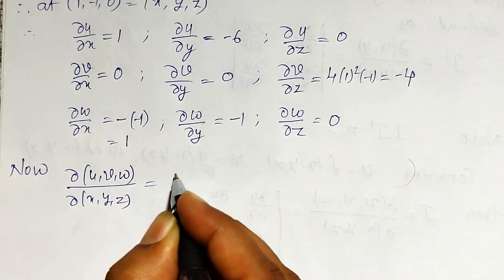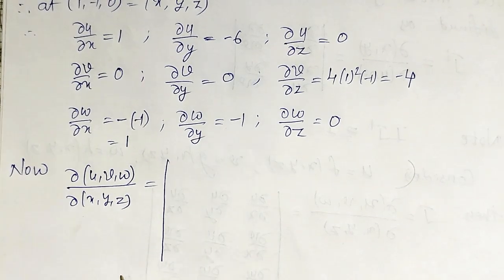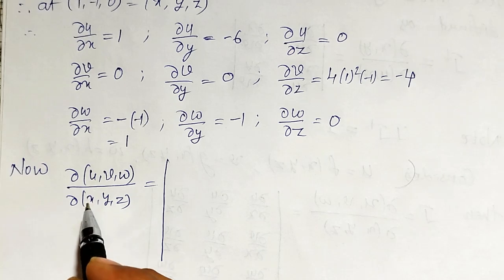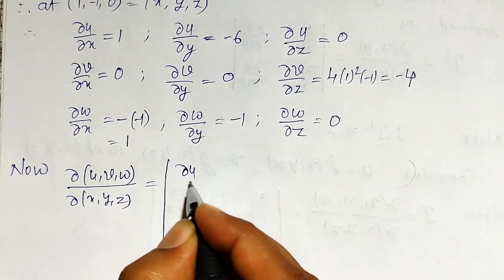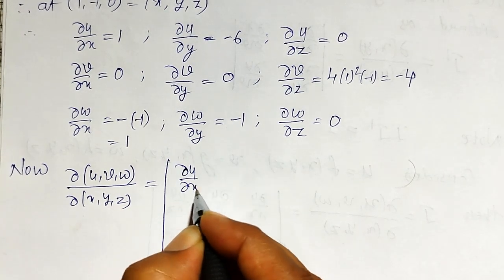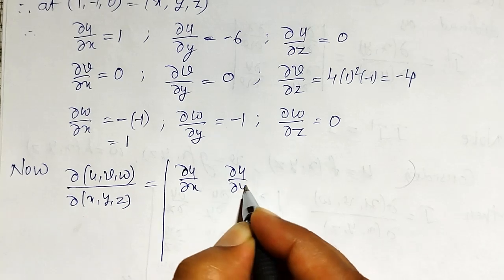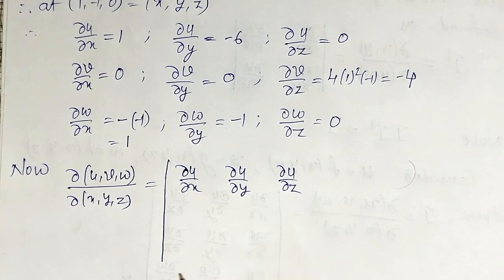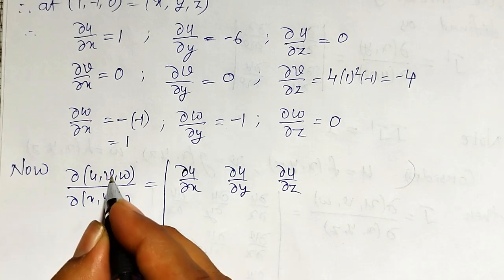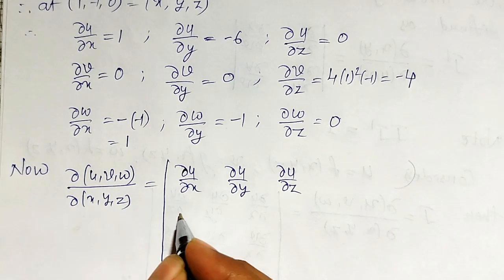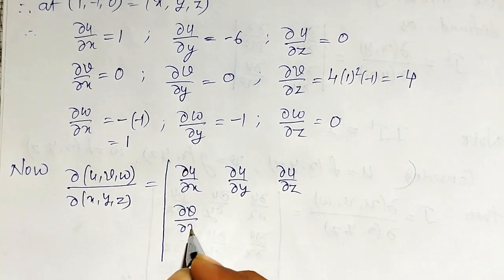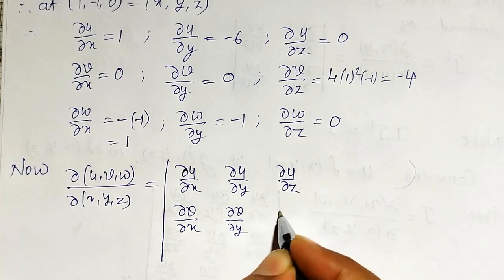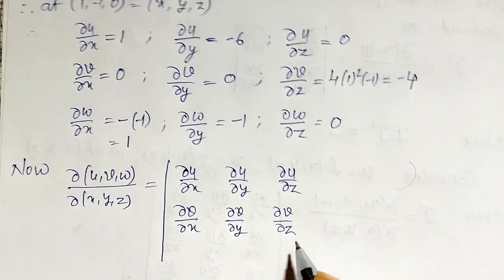The Jacobian ∂(u,v,w)/∂(x,y,z) is defined as a third-order determinant. The first row contains the partial derivatives of u with respect to x, y, z: ∂u/∂x, ∂u/∂y, ∂u/∂z. The second row contains the partial derivatives of v: ∂v/∂x, ∂v/∂y, ∂v/∂z.